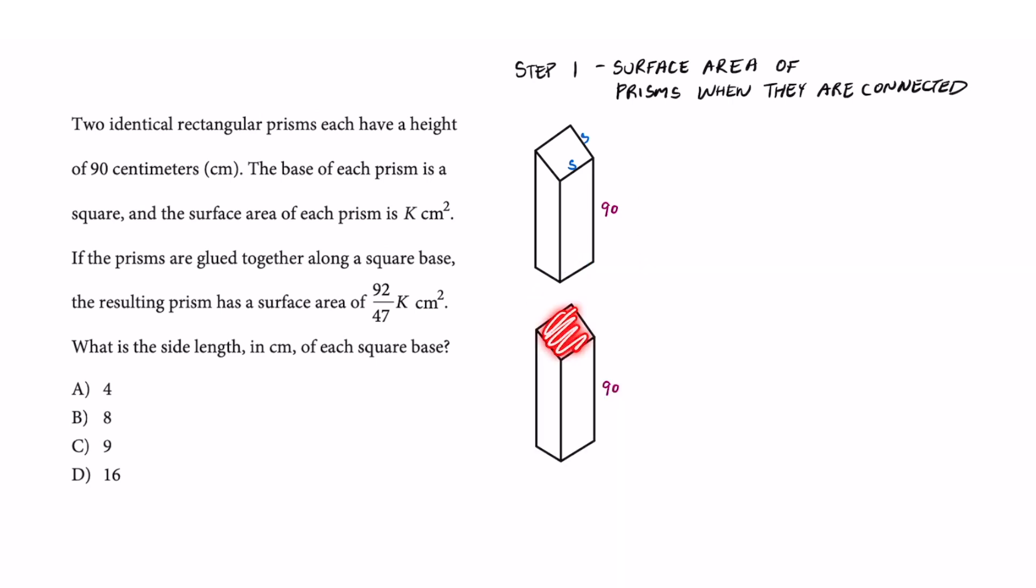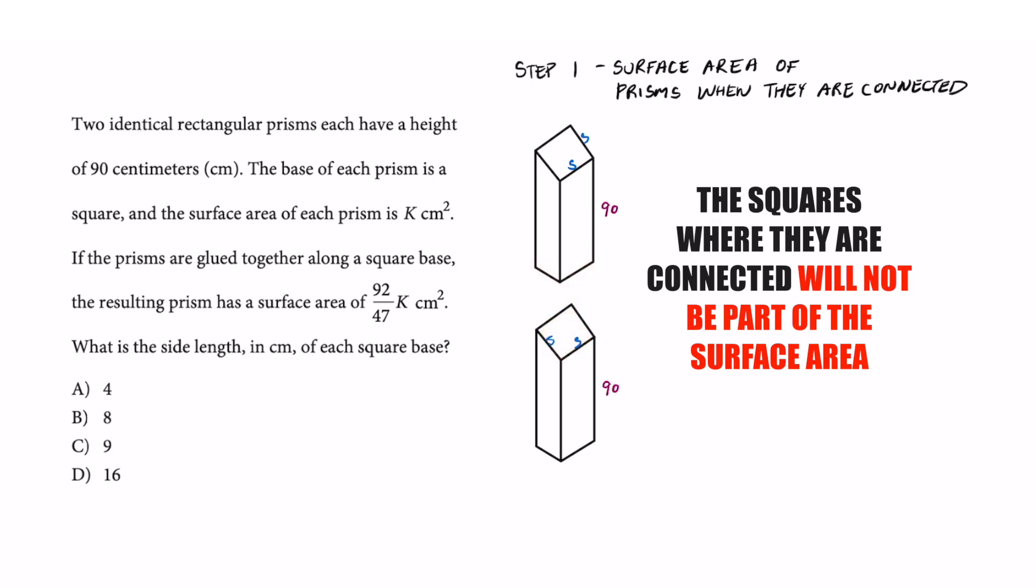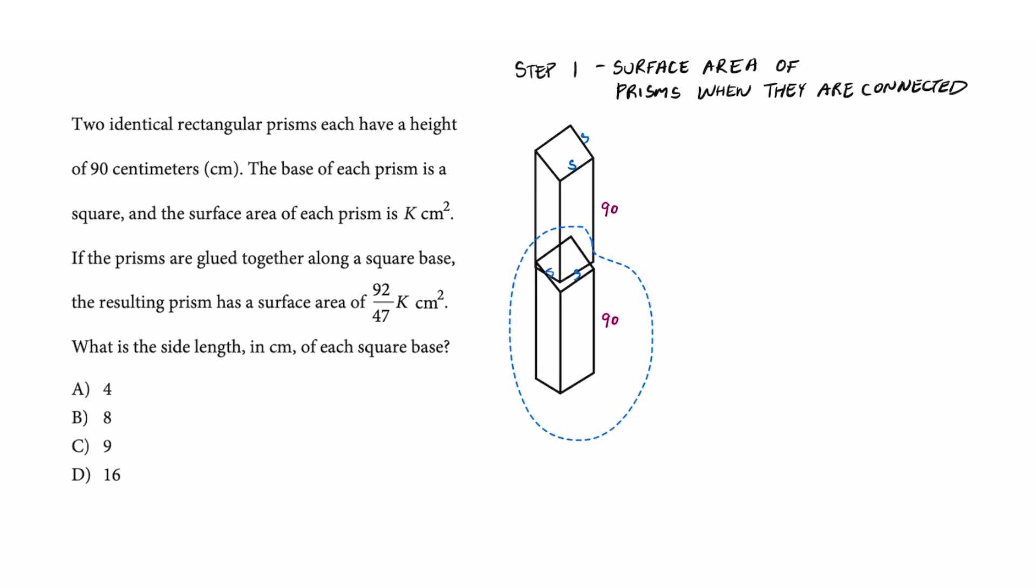This part right here and the bottom of the square of this prism is no longer going to be exposed. And that is an important part to this problem. So what does that mean?